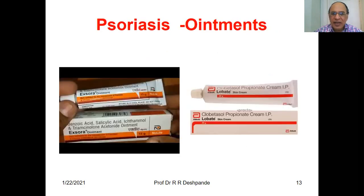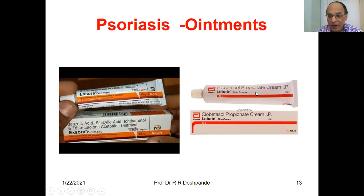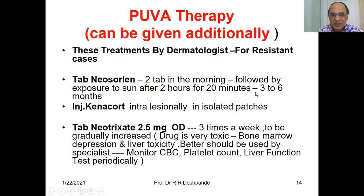Egzura ointment contains benzoic acid, salicylic acid, ichthammol, and triamcinolone — this is a steroid. Lobate ointment contains clobetasol propionate, also a steroid ointment. PUVA therapy can be given additionally.